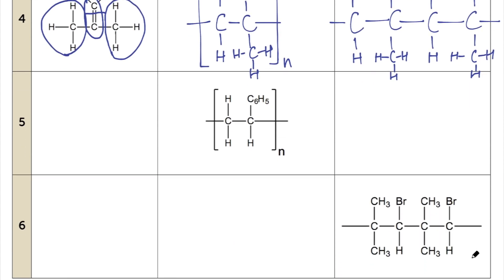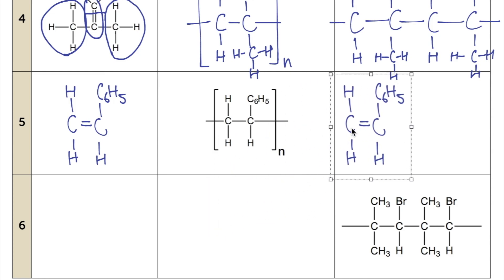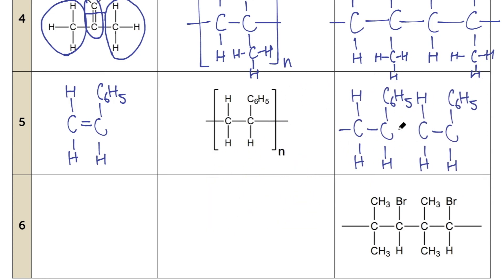Question five is a little bit different — we are doing the reverse. Given the structural formula of the polymer, how do we draw the structure of the monomer? We just work backwards: remove the n, remove the brackets, and put back the double bond. That gives us the structure of the monomer. For two repeating units, we just draw it twice.